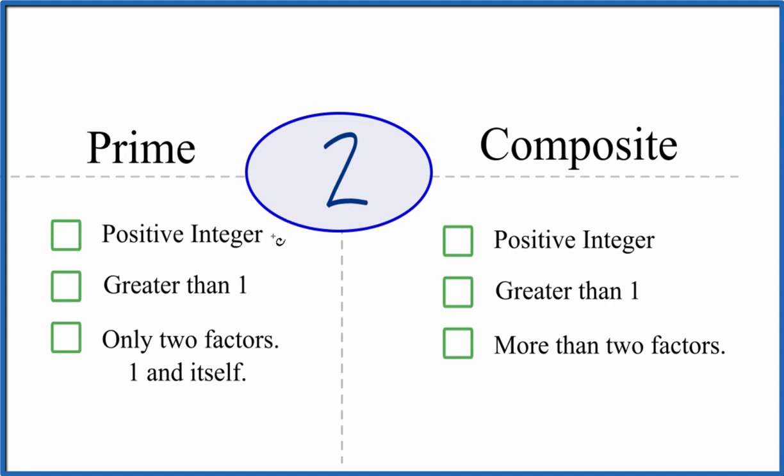So first off, is 2 a positive integer? It's a positive number, it's a whole number. Is 2 greater than 1? Yep.